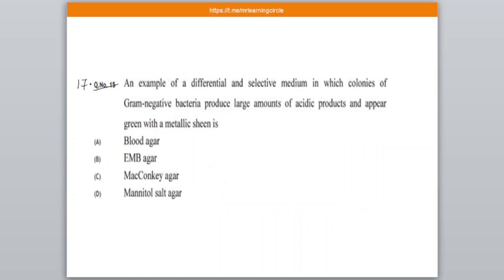Question number 17. An example of a differential and selective medium in which colonies of gram-negative bacteria produce large amounts of acidic products and appear green with a metallic sheen is — A: Blood agar, B: EMB agar, C: MacConkey agar, D: Mannitol salt agar. The correct option is B — EMB agar (Eosin Methylene Blue agar).